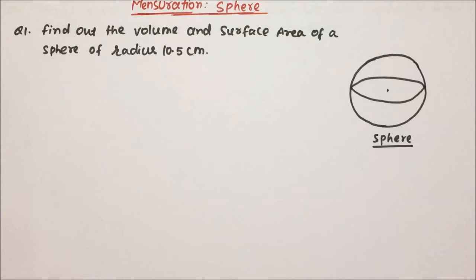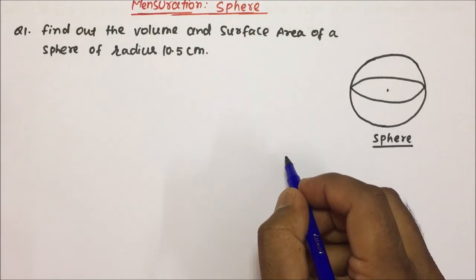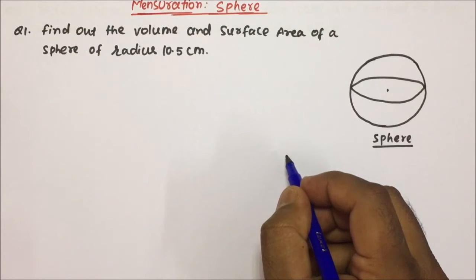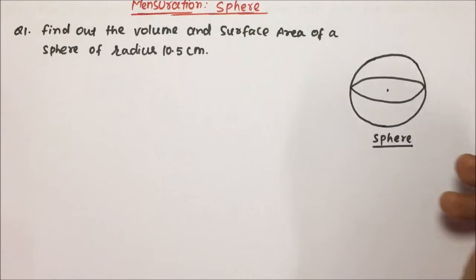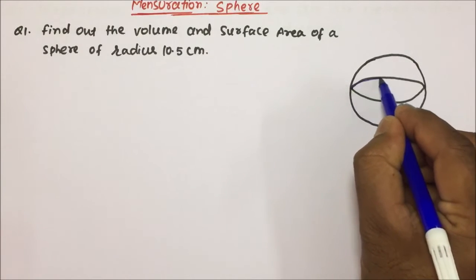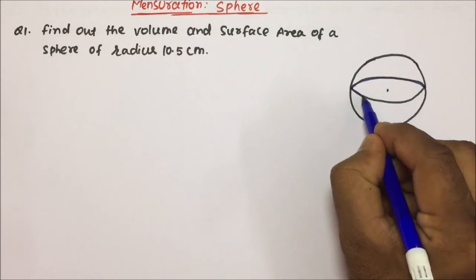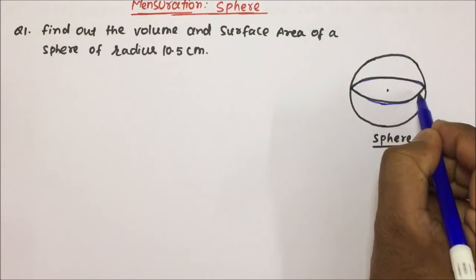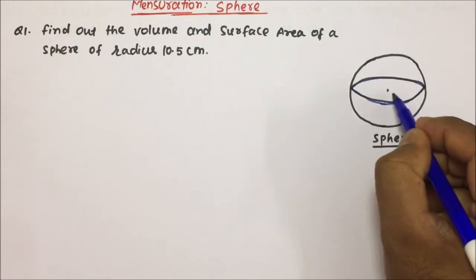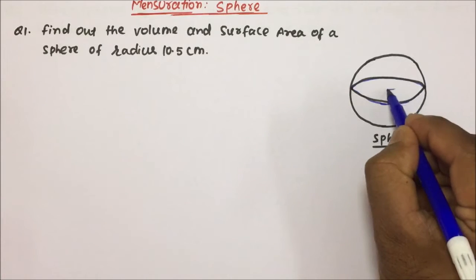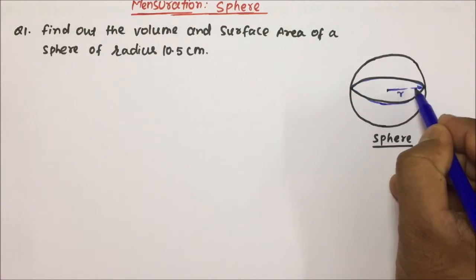Now friends, our today's topic is Sphere. So in today's session, we are going to study about Sphere and we will be able to calculate the volume and the surface area of a Sphere. Your Sphere somewhat looks like this, and this will become your radius.